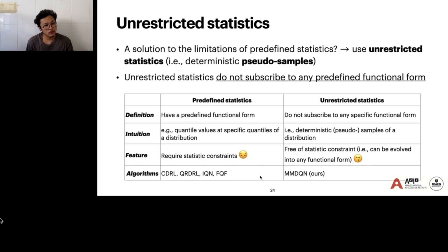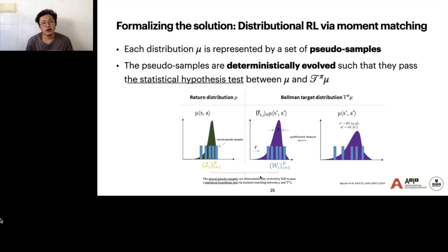A solution to this is that we propose predefined unrestricted statistics, which is basically pseudo-samples of a return distribution. Unrestricted statistics do not comply to any predefined functional form. That's why it doesn't require any statistic constraints as in the previous methods. The idea is that each distribution μ is represented by a set of pseudo-samples. The pseudo-samples are not predefined statistics; it's an unrestricted statistic. The pseudo-samples are deterministically evolved such that they pass a statistical hypothesis test between μ and its distributional Bellman target, T μ.